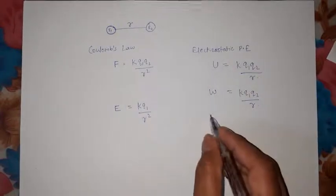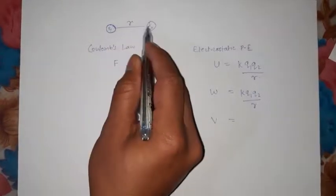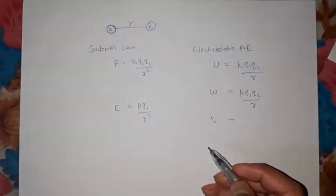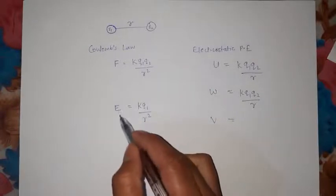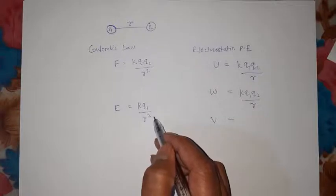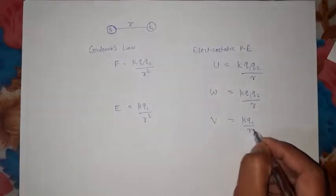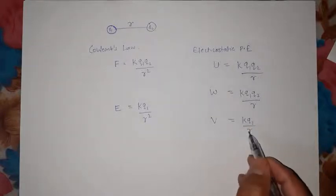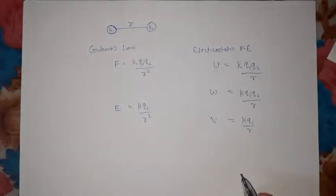And student, if I say what is electric potential? For charge Q1 at distance r, what is electric potential? The electric field is force per unit charge. So what we want to do is find potential, which is Q1 divided by r. So the formula is V = kQ1/r.